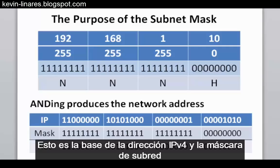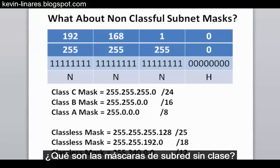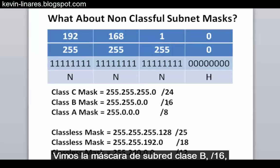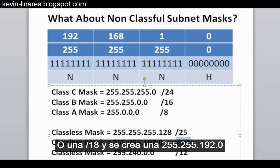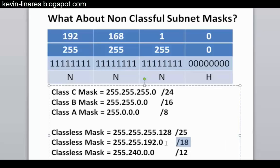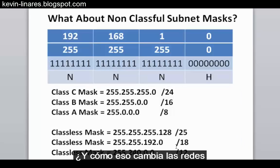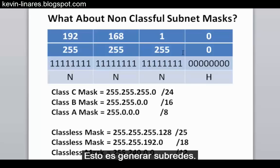This is at the core of IPv4 addressing and subnetting in general. What about non-classful subnet masks? We've seen the class C subnet mask slash 24, the class B slash 16, and the class A slash 8. But what if we use classless masks — like a slash 25, a slash 18 creating 255.255.192.0, or a slash 12 creating 255.240.0.0? This is called subnetting.